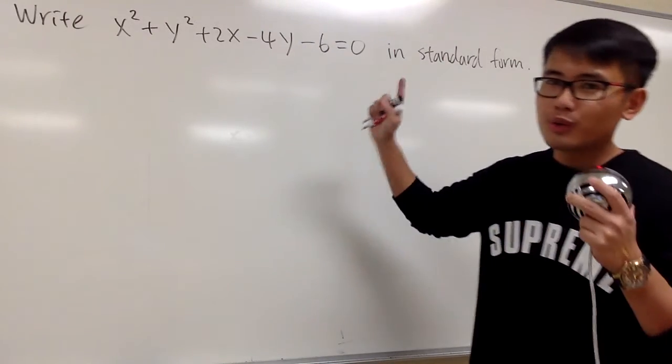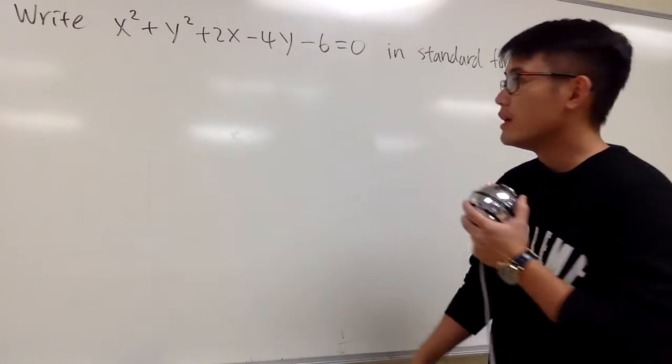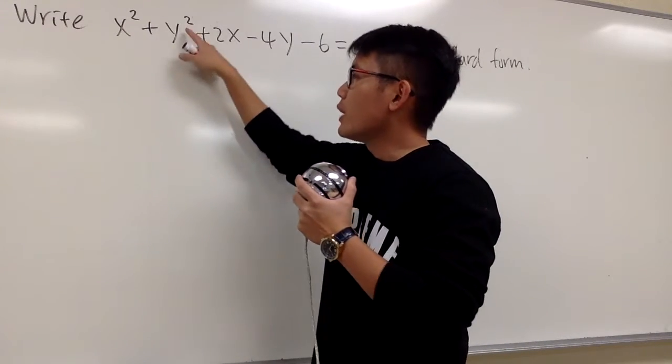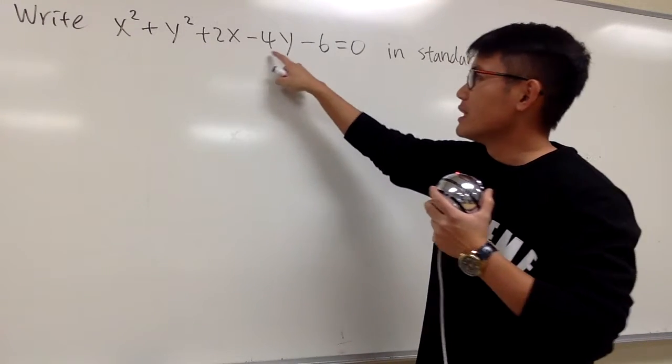So here we're given this equation, and we're going to write this into its standard form. As we can see, we have x squared plus y squared, but then we also have the plus 2x and then the minus 4y.